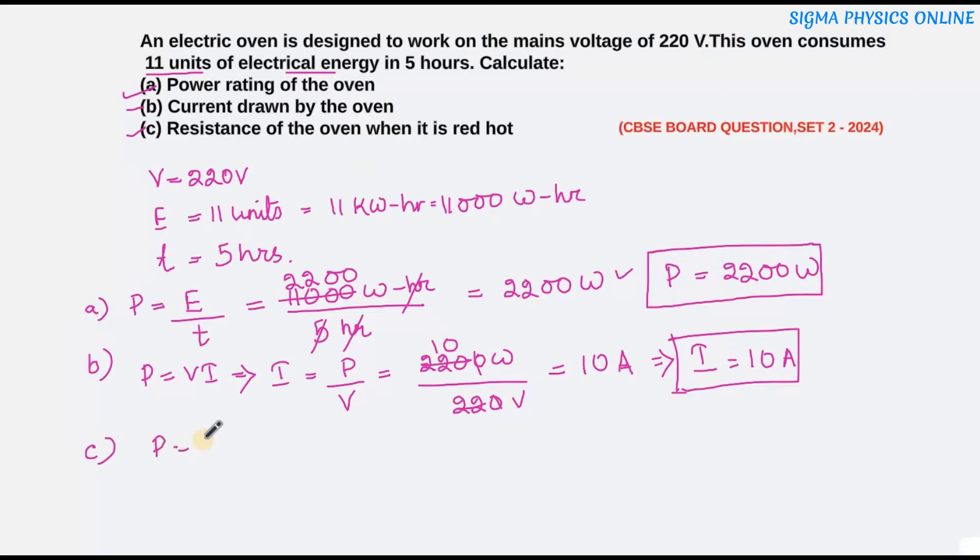The power is given by V square by R. From here the resistance would be R will be V square by P. What is V? V is 220 volt. It's square by the power is 2200 watt.